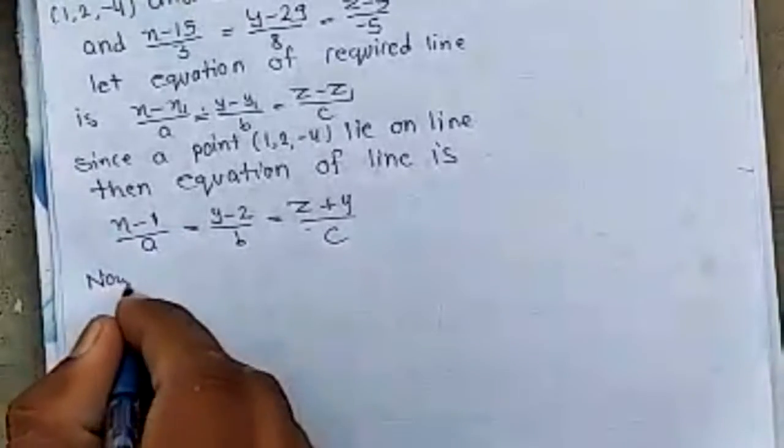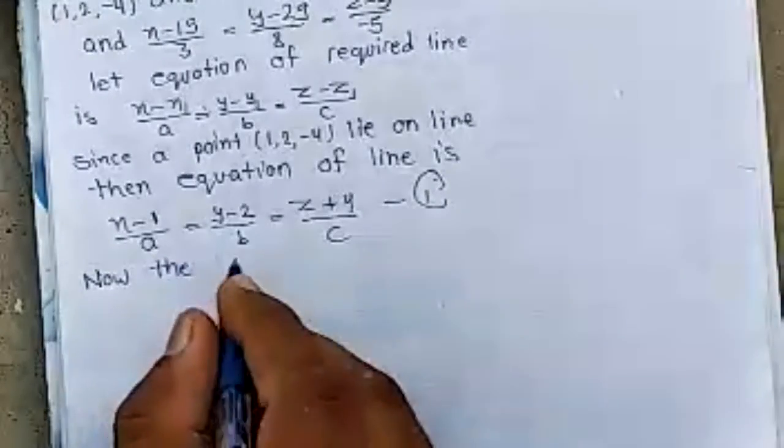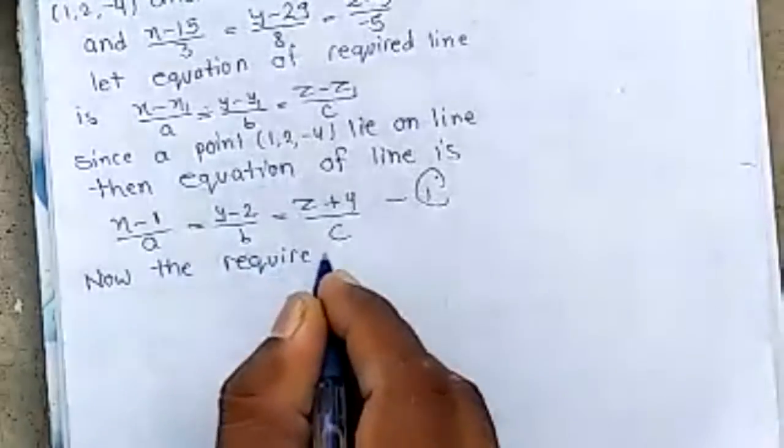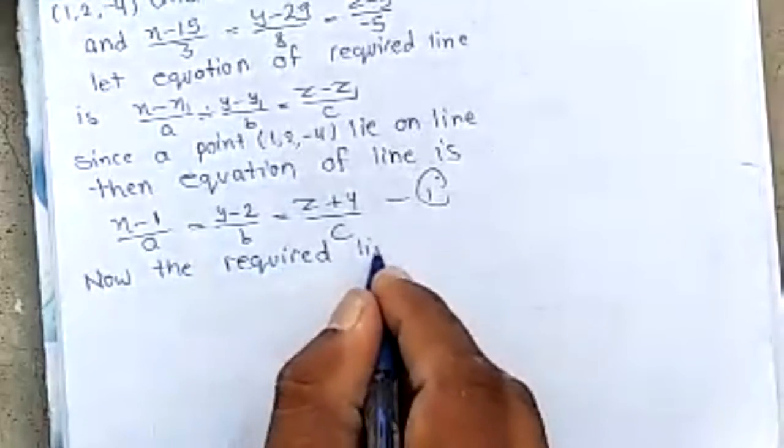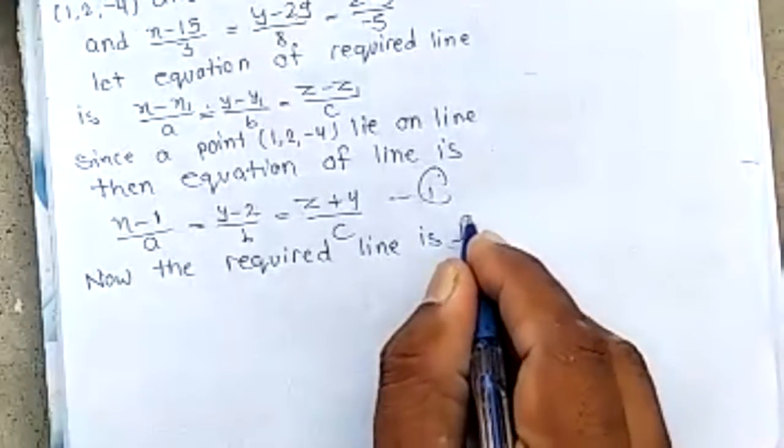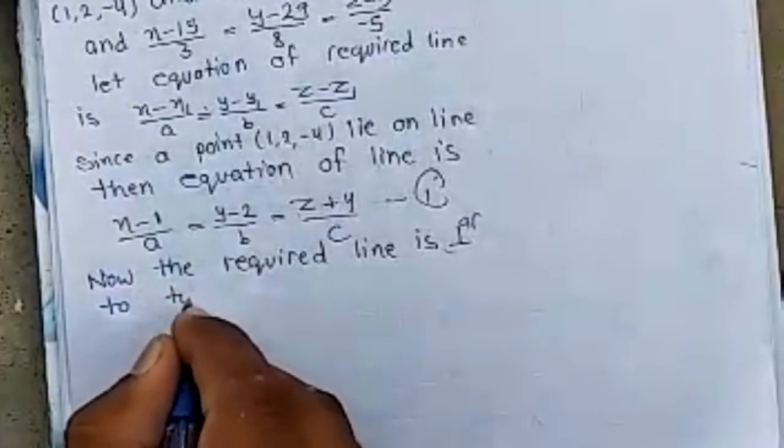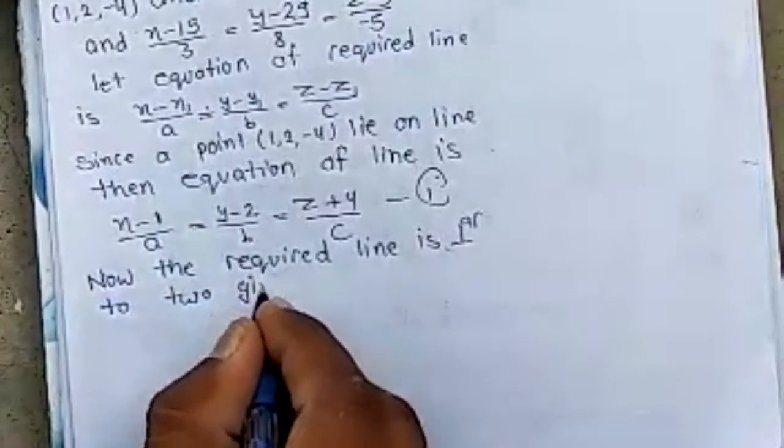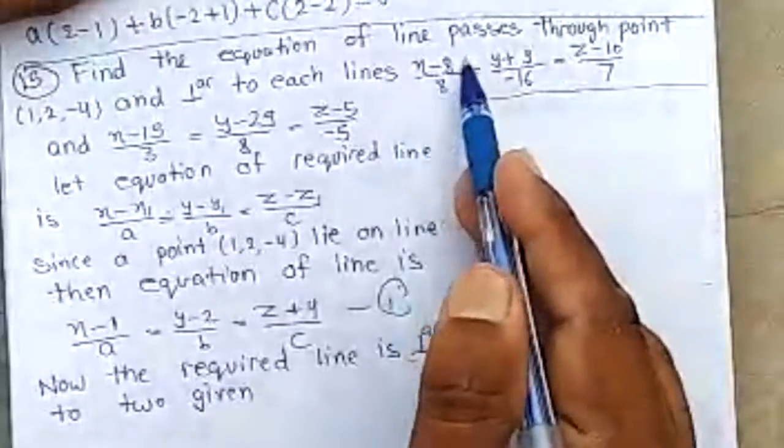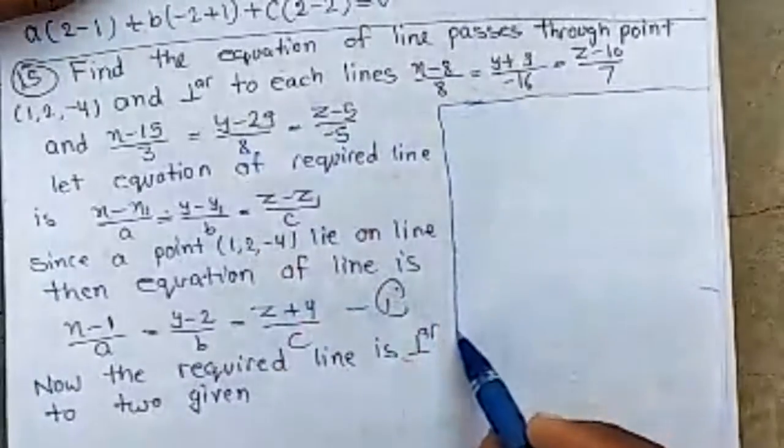Now the required line is perpendicular to two given lines. First line is this, second line is this. We know that if two lines are perpendicular,